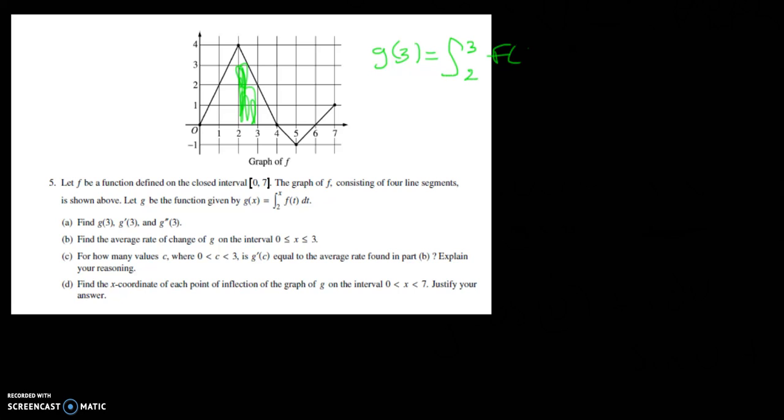So f of t dt is equal to h over 2. In this case the height is 1. It's 1 over 2 and the two bases are this looks like it's 4 and this looks like it's a height of 2. So 4 plus 2.